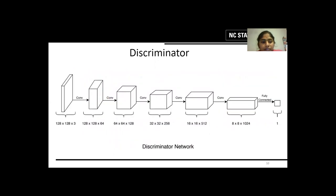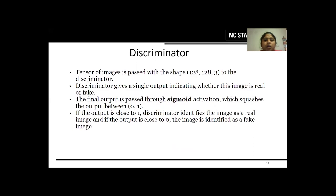Next, we move on to the discriminator structure. What happens here is that we go from a 128x128 image to a 0 or 1 output, depicting whether it is a fake or a real image. The discriminator network uses a sigmoid activation function which squashes the input to between 0 and 1. We are using a normalized image as input with pixel ranges between minus 1 and 1 instead of the usual 0 to 255. So if the output is close to 1, the discriminator identifies the image as real. If the output is close to 0, the image is identified as fake.